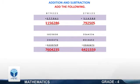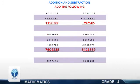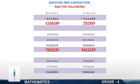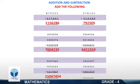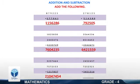Next: 3,257,464 plus 7,572,153 plus 1,217,837. Yes, your answer is 13,156,094. Next: 12,047,454 plus 2,452,457 plus 7,252,321 plus 3,451,316. Yes, your answer is 13,156,094.